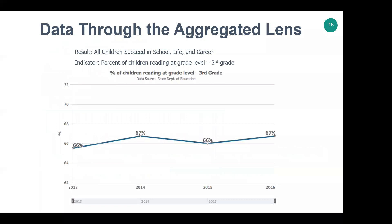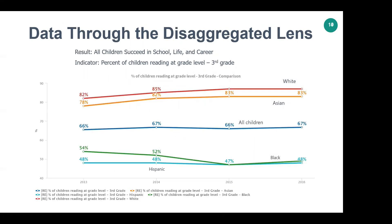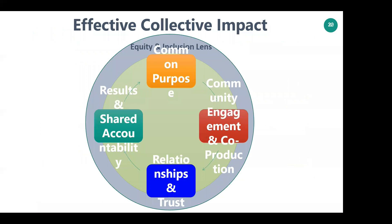Just a quick example: if we look at third grade reading as our result — all children succeed in school, life, and career — we can see we're making slow progress overall. But when you disaggregate the data so that you don't miss the true story, you find a very different story. Different strategies are needed to help Black and Hispanic kids versus White and Asian kids, because the 'all' is an average. That's why it's so important to always look through disaggregated data through the equity lens.